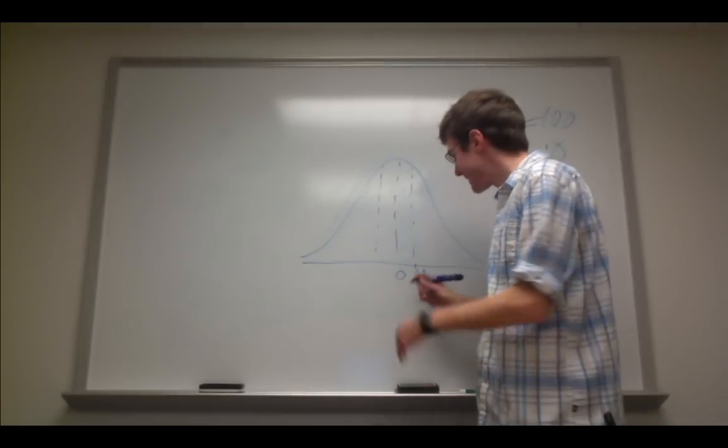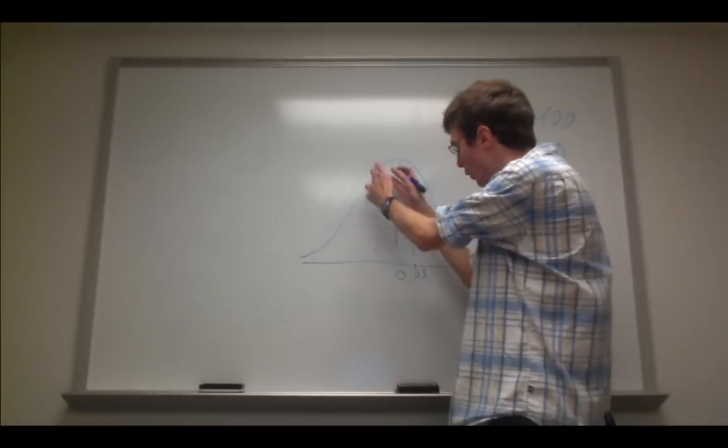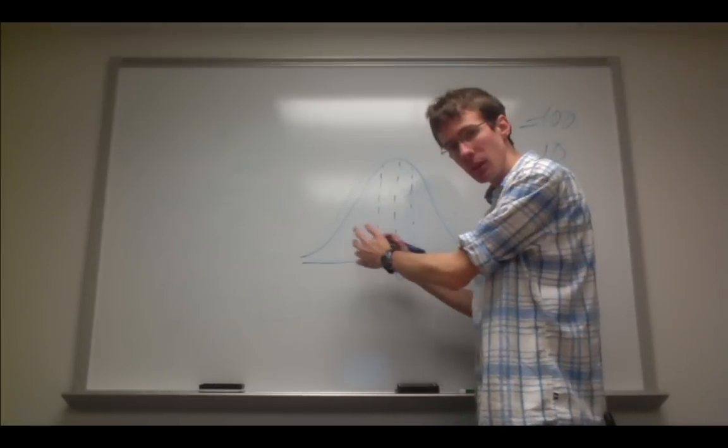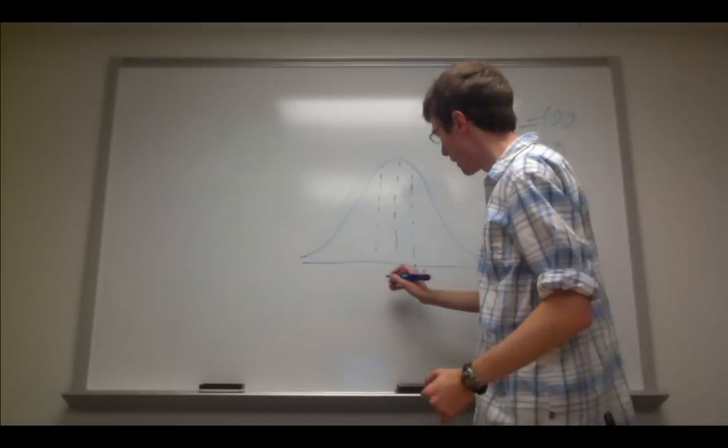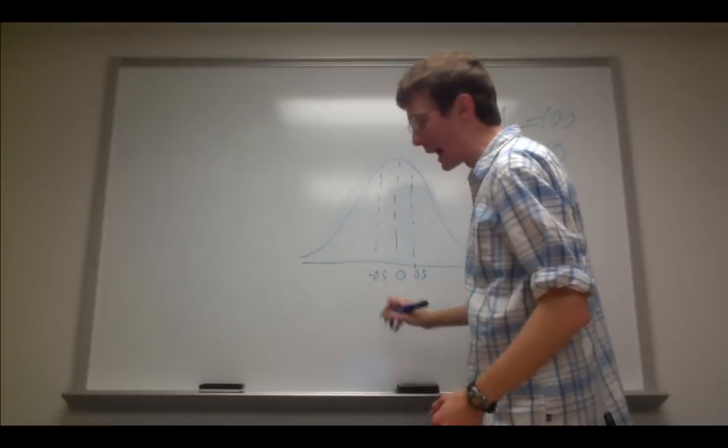Likewise, I know that I can just flip this over and get the other 19% on this half of the center of the distribution. That would be a z-score of negative 0.5.